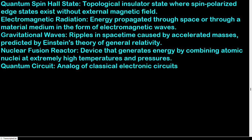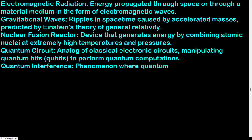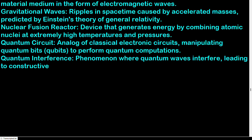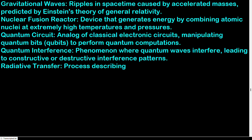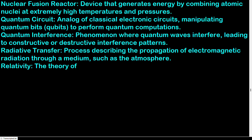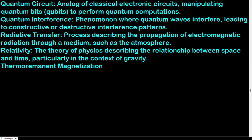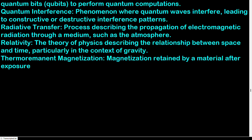Quantum circuit: analog of classical electronic circuits, manipulating quantum bits (qubits) to perform quantum computations. Quantum interference: phenomenon where quantum waves interfere, leading to constructive or destructive interference patterns. Radiative transfer: process describing the propagation of electromagnetic radiation through a medium, such as the atmosphere. Relativity: the theory of physics describing the relationship between space and time, particularly in the context of gravity. Thermoremanent magnetization: magnetization retained by a material after exposure to a magnetic field and subsequent cooling.